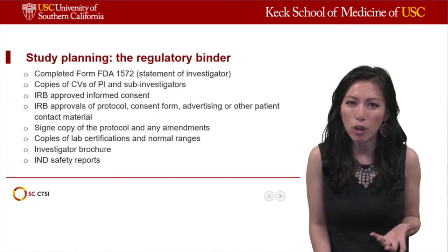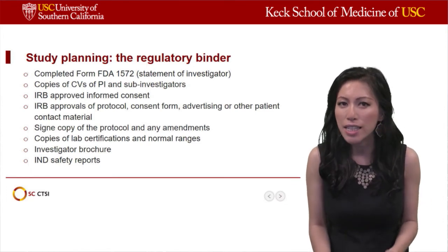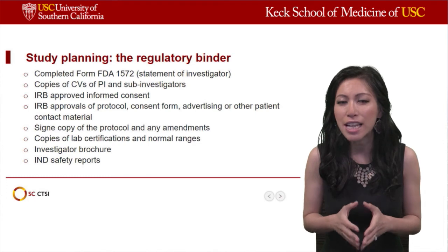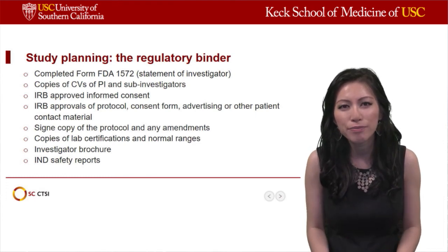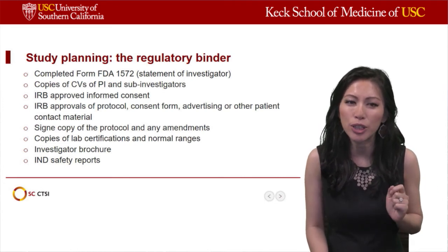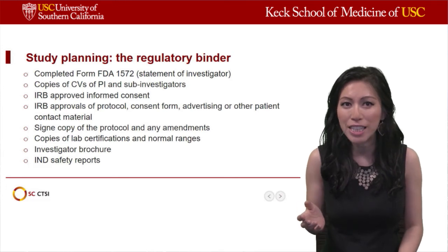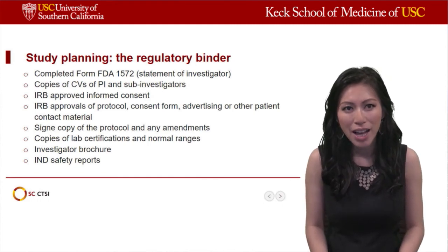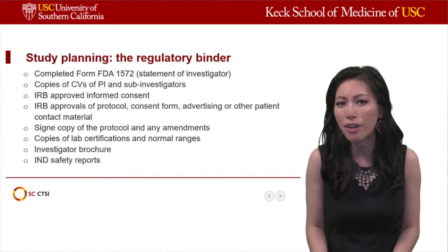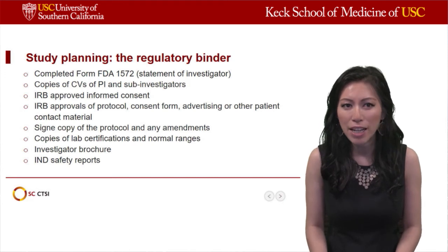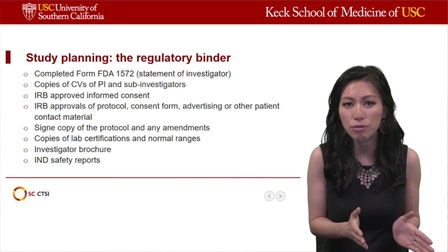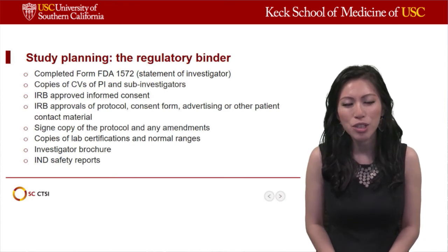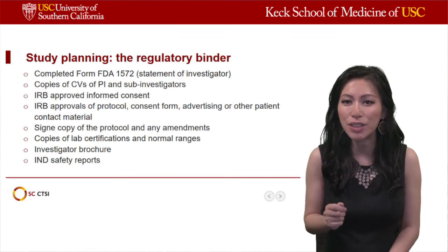The previous slides covered helpful tools for organizing your study. This slide shows certain regulatory documents that typically go into a binder called the regulatory binder, which is essential and often required for clinical trials. For example, the FDA 1572 form required of all investigators, copies of PI and sub-investigators' CVs, the IRB-approved informed consent form, the protocol, and approved advertisements. Any amendments since the protocol was initially written need to be included, along with copies of lab certifications, normal ranges, the investigator brochure, and IND safety reports.